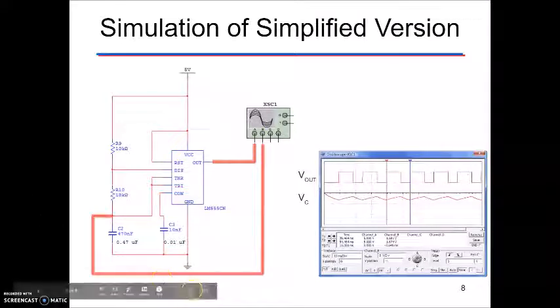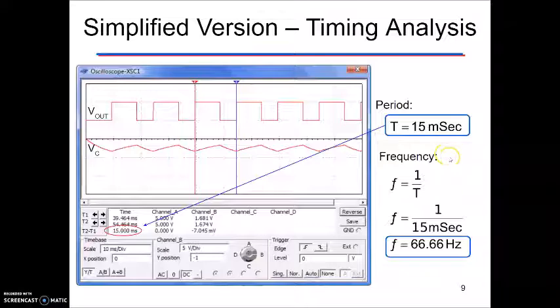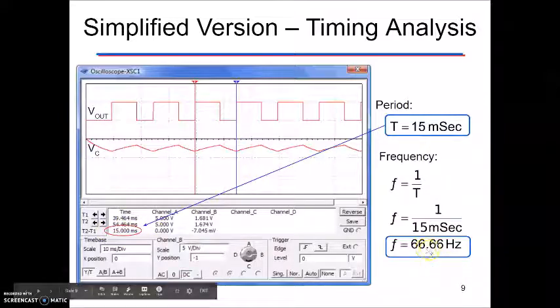So then we have V out right here and then we have VC right here. V out symbolizes here, VC is channel B. Looking at that simplified version of that timing analysis you can see right here we've got T for our period and then our frequency again 66.66 hertz is what we're looking at.